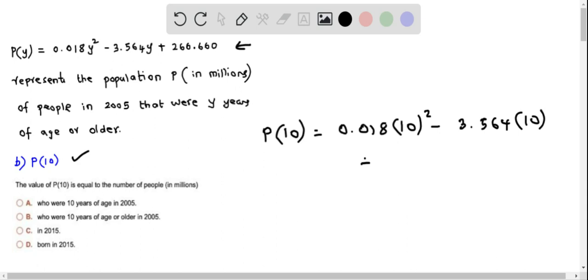So I replace y by 10 and then we have 266.660. So we plug this into the calculator and when we do that we get the value as 304.1. So this is in millions. So this is the value of p of 10.